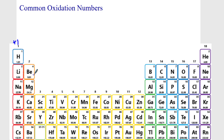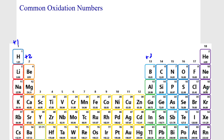The alkaline earth metals — beryllium, magnesium, calcium, strontium, barium — will tend to become positive two because of their two valence electrons. Something like aluminum, since aluminum is in 3S2, 3P1, has three valence electrons, it will tend to become positive three.